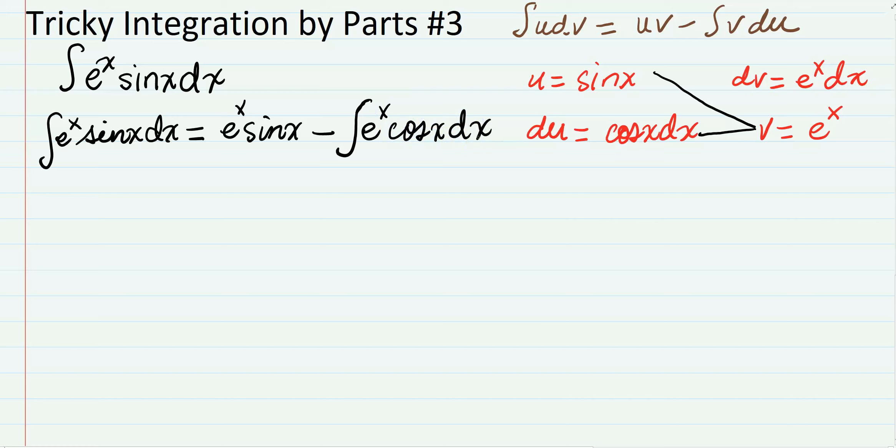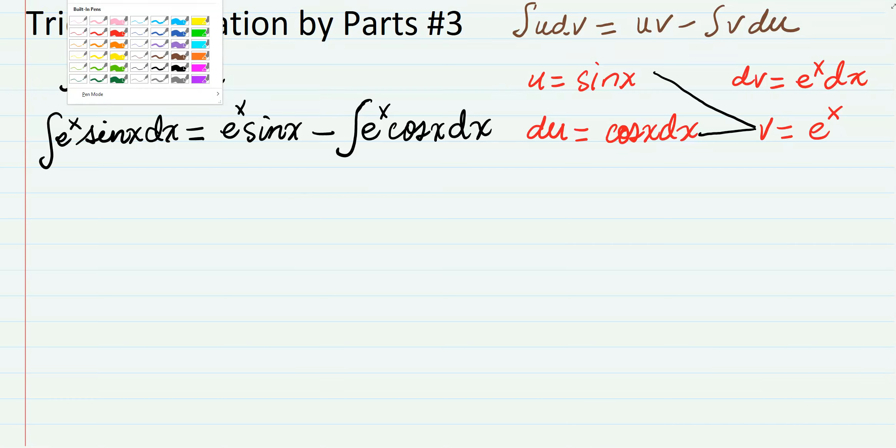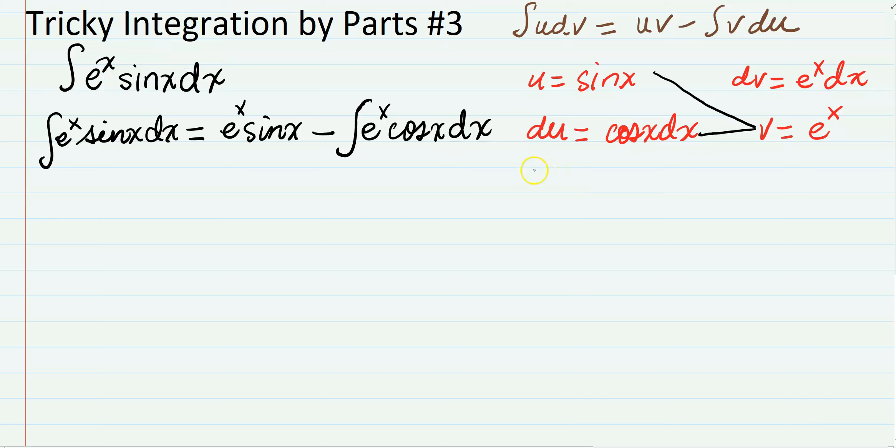So now let u in this case, let u be cos(x), then du will be negative sin(x) dx, and then let dv be again e to the x dx, then v will be e to the x.